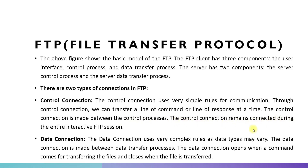The control connection remains connected during the entire interactive FTP session. The data connection uses very complex rules as data types may vary. The data connection is made between the data transfer processes and is used to transfer data — it is more complex. The data connection opens when a command comes for transferring the files and closes when the file is transferred.